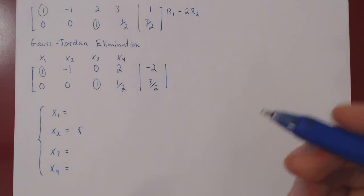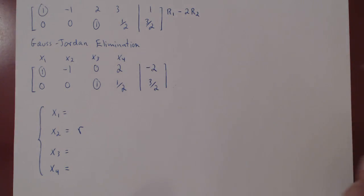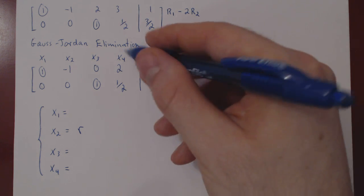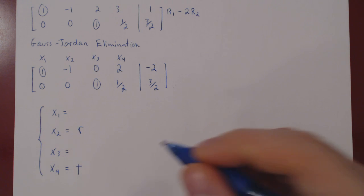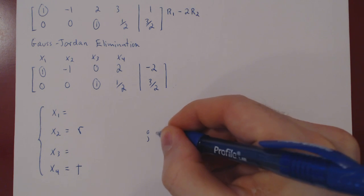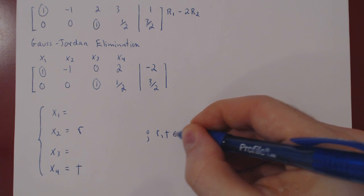x4 is also free. We could call x4 s or t, any letter we'll do, so we'll use t. We have to be explicit about this, that r and t can range over all real values.